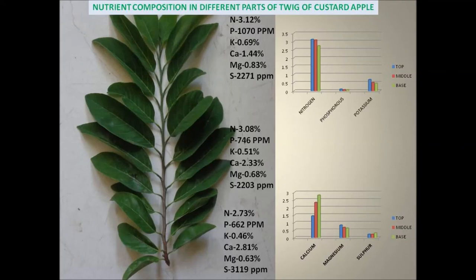From July, twigs grow in size and reach up to 20 to 26 leaf stages. Again, new flowers come and shed into fruits. This stage continues up to August. In September, some of the fruits almost reach full size and fruit maturity starts, and this stage continues up to October and November.